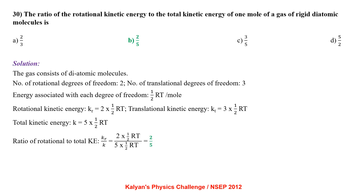The ratio of the rotational kinetic energy to the total kinetic energy of 1 mol of a gas of rigid diatomic molecules. Diatomic molecules have 2 rotational and 3 translational degrees of freedom. Energy per degree of freedom = ½RT per mole. Rotational KE = 2 × ½RT. Total KE = 5 × ½RT. Ratio = 2/5.